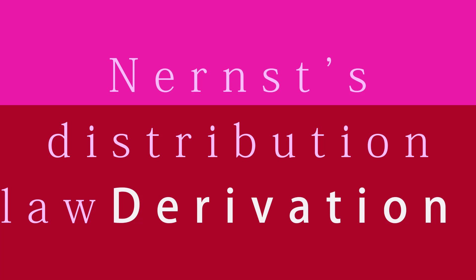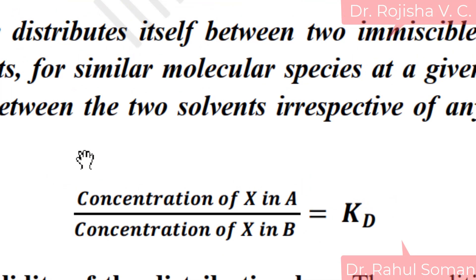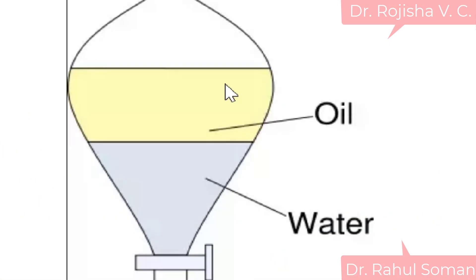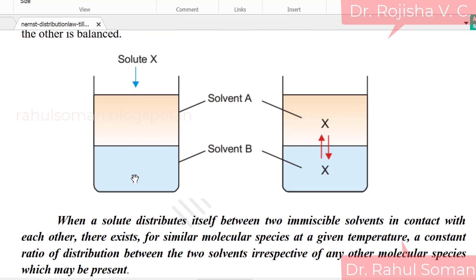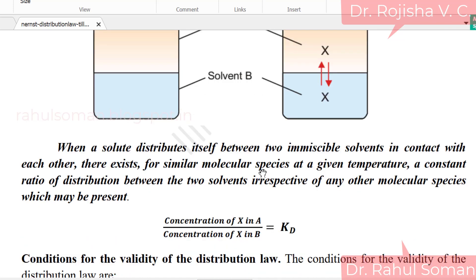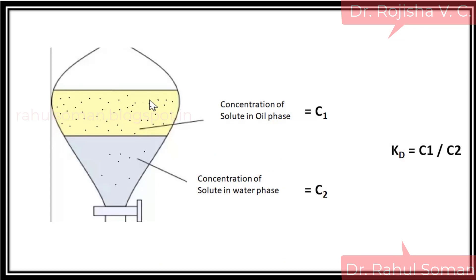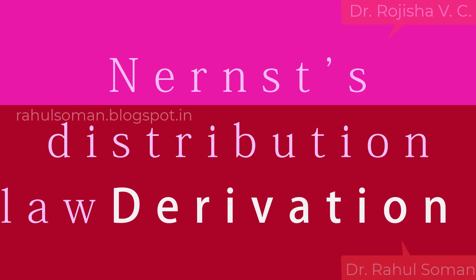Hello, welcome all. Today we are going to see the derivation of Nernst's Distribution Law. Before that, what we have seen in previous classes: Nernst's Distribution Law speaks about a two-phase liquid system, where we have solvents that are immiscible in character and thus exist in two different phases. Whenever we add a solute to this two-phase system, the ratio of concentration of that solute in one solvent to the other solvent will be a constant, named as the partition coefficient or distribution constant.